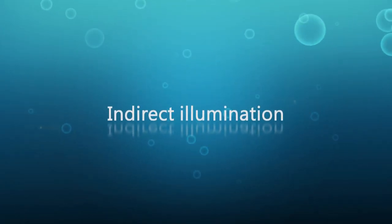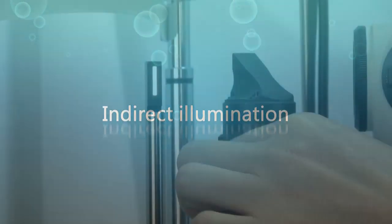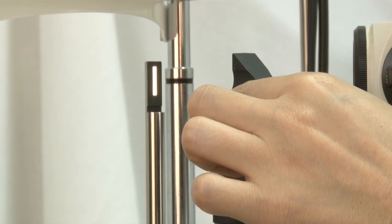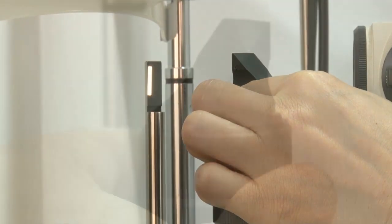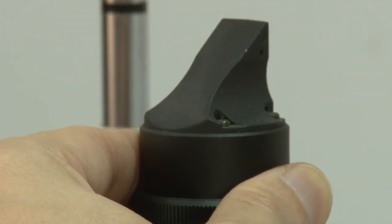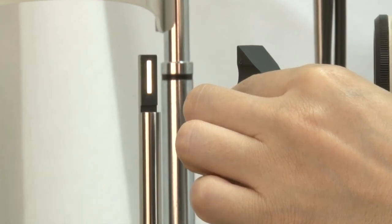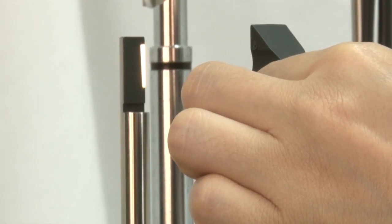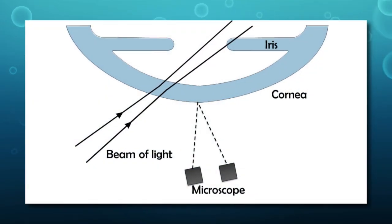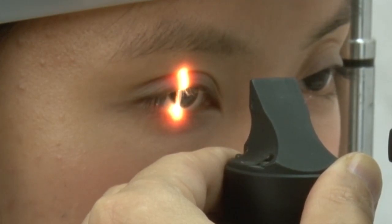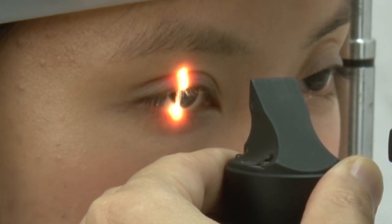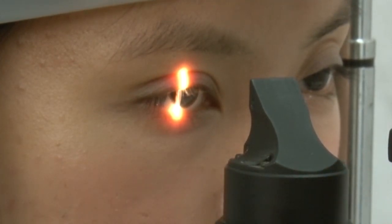The third type is indirect illumination. The light source and observation focus do not coincide on the same spot. This can be done by rotating the mirror of the light source out of the click position. It is useful for viewing semi-transparent structures against an illuminated background, or the surface characteristics in areas adjacent to the light beam, where these details are otherwise washed out by the intensity of the light beam itself.